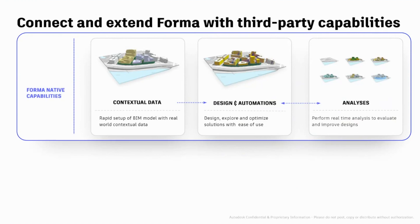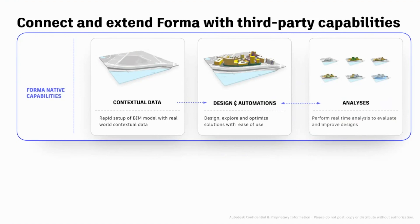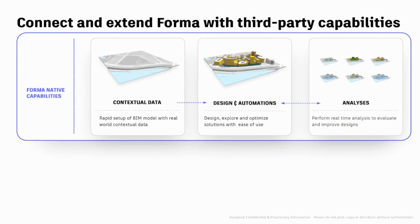We are trying to basically provide you with the wisdom of 'if I knew that earlier, I would make a better decision.' To do that, we offer three sets of main capabilities. The first one is what we call contextual data — we allow you to create your project very quickly, involving geo-referencing, selecting your area, and bringing surrounding data: roads, terrain, and other data to kickstart your project very fast.